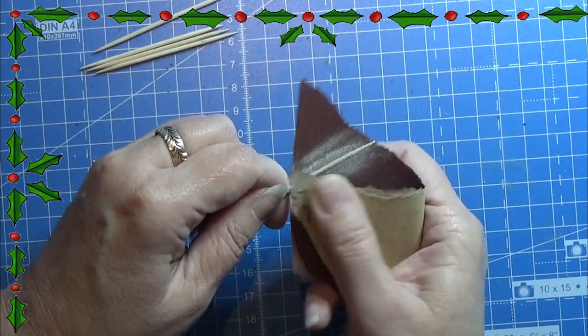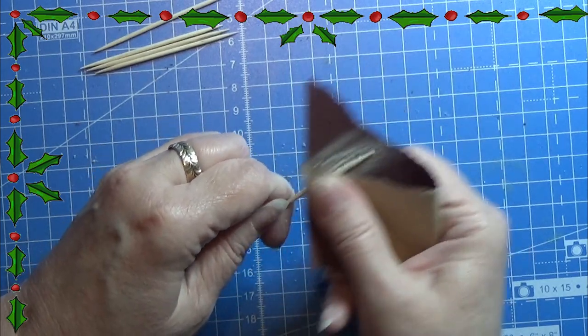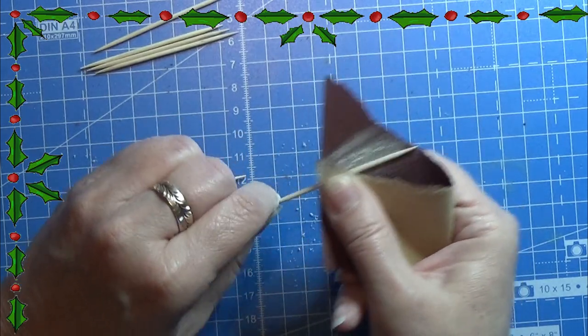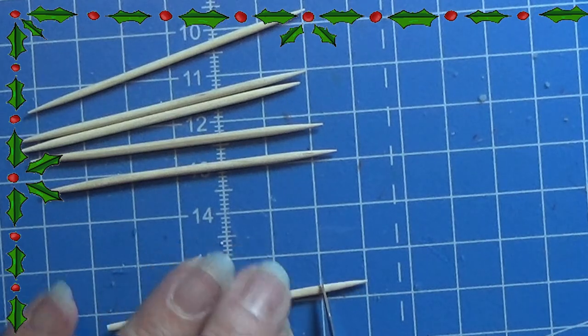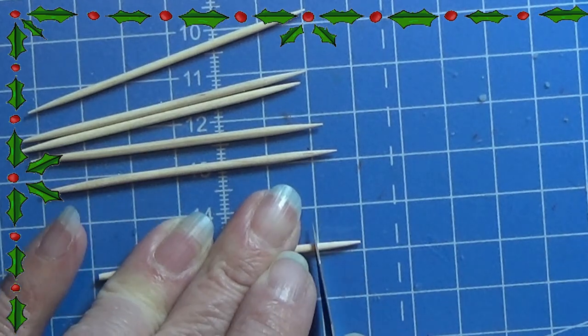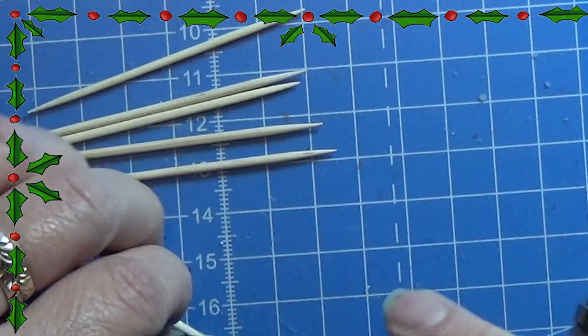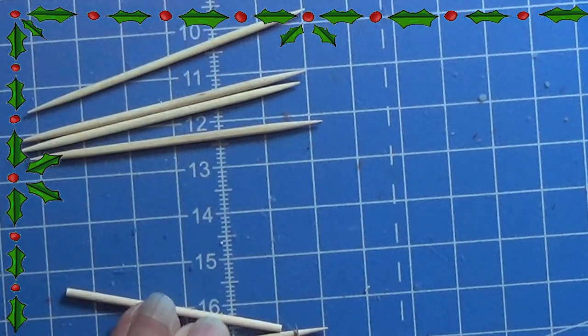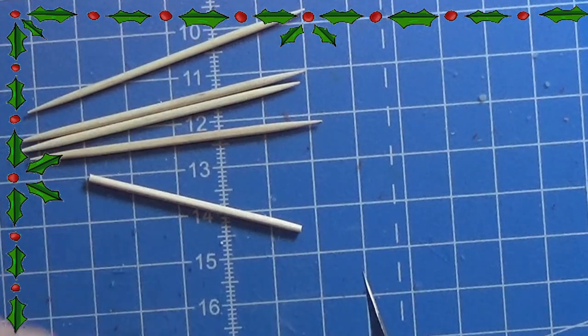They are a bit too big for this project so I am sanding them smaller. Then I am just cutting off the tip in both ends of these toothpicks so that I have equal long pieces here for all my rockets.